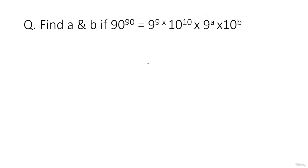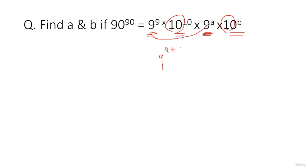Now try this next question yourself — pause and take two minutes to think about it. The question is: 90 raised to 90 equals 9 raised to 9, times 10 raised to 10, times 9 raised to a, times 10 raised to b. Looking at the right-hand side, it contains powers of 9 and powers of 10. Using the first property — a^m × a^n = a^(m+n) — we get 9^9 × 9^a = 9^(a+9), and 10^10 × 10^b = 10^(b+10).